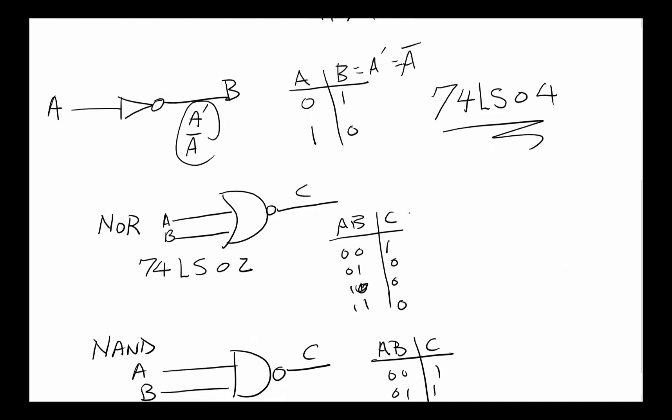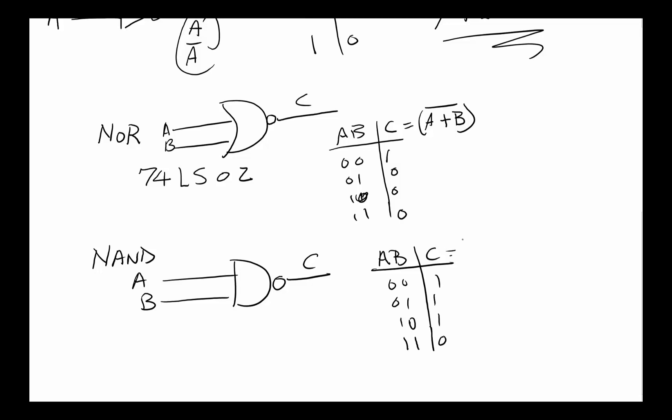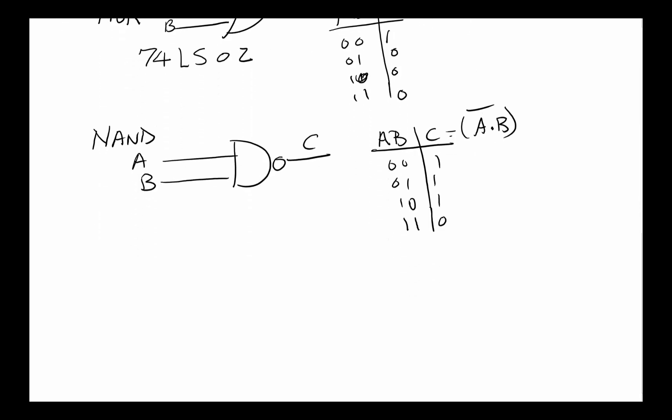The NOR of course is basically A OR B but after the OR is inverted, so that's an OR symbol. And the NAND symbol is A AND B but it's a NAND so it's got a line above it.